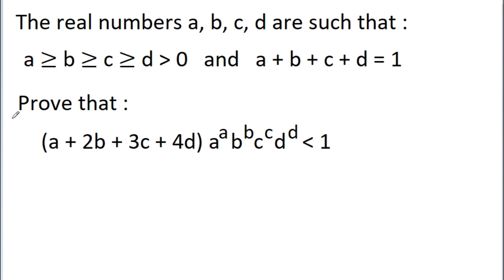In this video, I have taken a problem from International Mathematical Olympiad 2020. It is given that A, B, C, D are real numbers such that A ≥ B ≥ C ≥ D > 0 and A + B + C + D = 1, and we have to prove that (A + 2B + 3C + 4D) · A^A · B^B · C^C · D^D is less than 1.